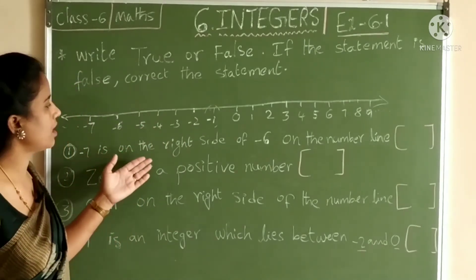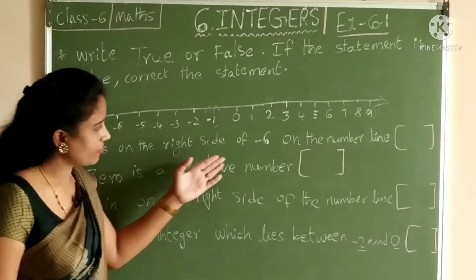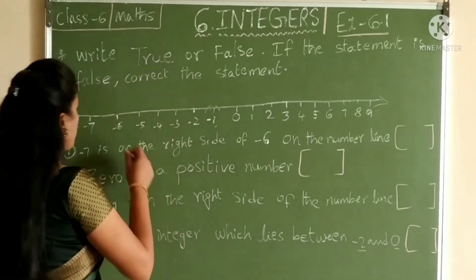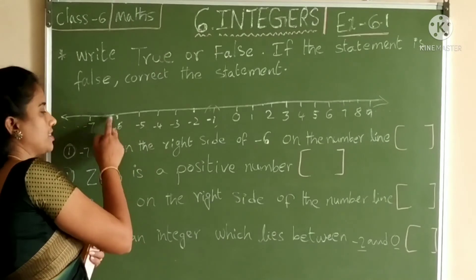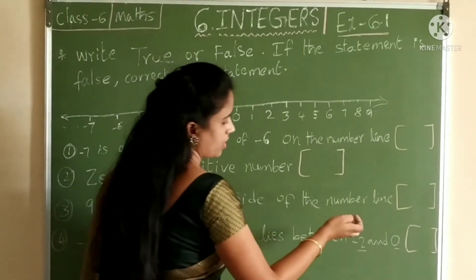So minus 7 is on the right side of minus 6. Is it right? No. Minus 7 is on the left side of minus 6. So write F.